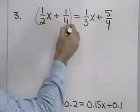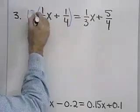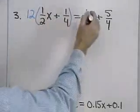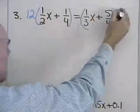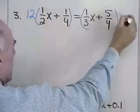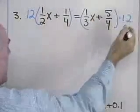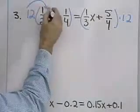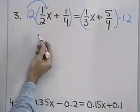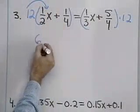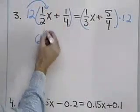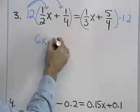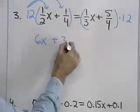You can work with these fractions if you like, or you can get rid of the fractions by multiplying both sides by the least common denominator for all the denominators you see. That would be the number 12. I'll multiply both sides by 12.